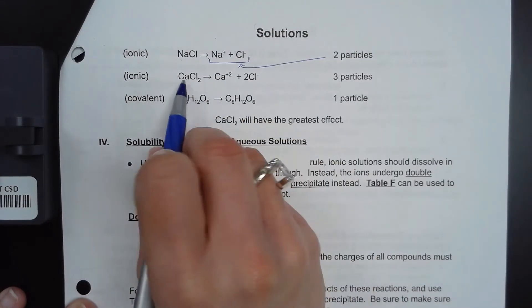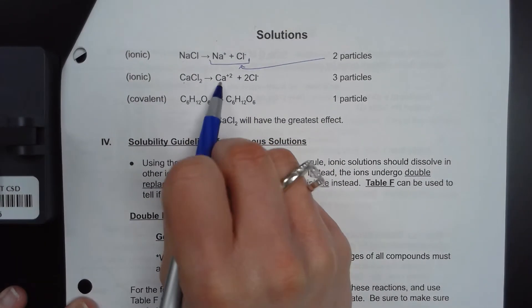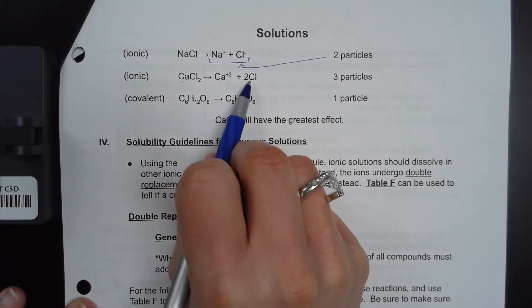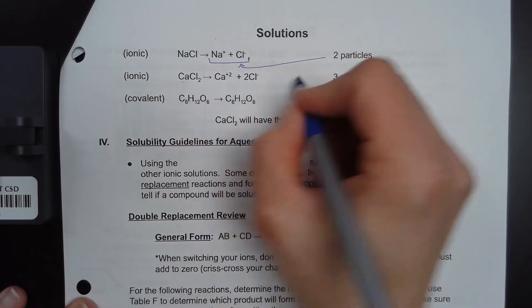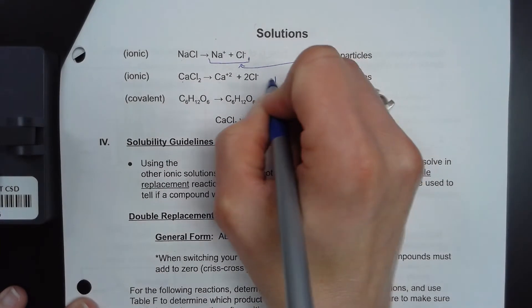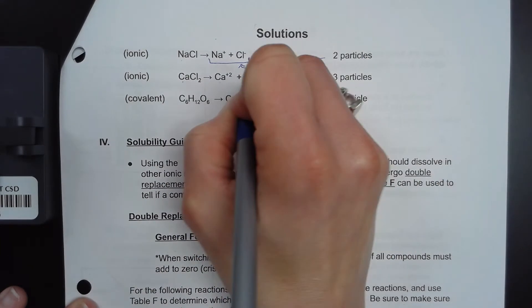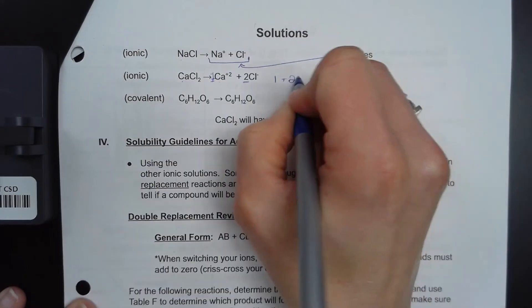CaCl2 when we break it up we get one calcium and two chlorines. We end up with three. How we get three is that one plus two. We're looking at those moles right there. Equals three.